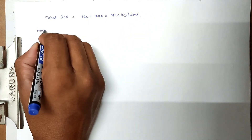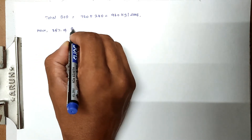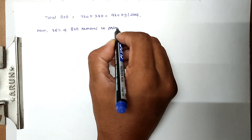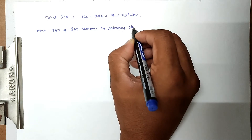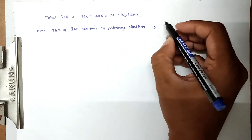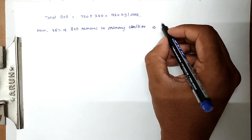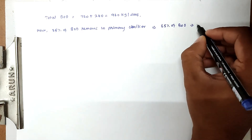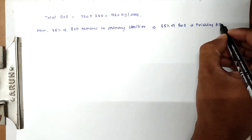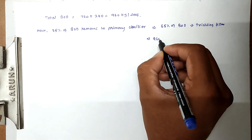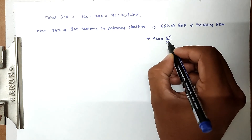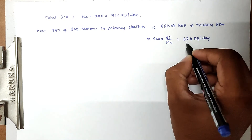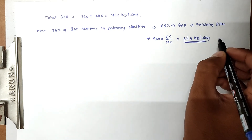Since 35% of BOD is removed in the primary clarifier, only 65% of BOD enters the trickling filter. So 960 × 65 / 100 gives us 624 kg per day. This is the BOD we have to treat.